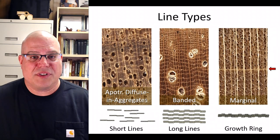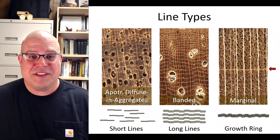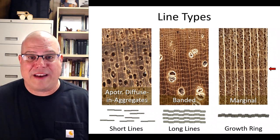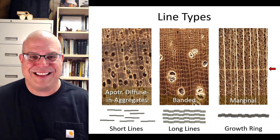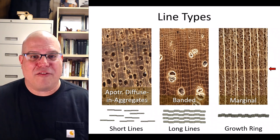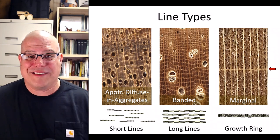Moving on to the line type, we'll start on the left with the apotracheal diffuse in aggregates pattern — can you see the short light-colored lines scattered throughout the growth ring? Some are touching a vessel, but some are not. In the middle, we have the banded pattern — see how those long horizontal lines intersect with the vertical rays to form what looks like a net? And on the right, we have marginal parenchyma — can you see the single prominent light-colored horizontal line between the growth rings?